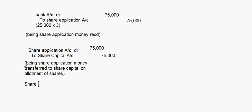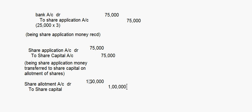After that, the allotment money becomes due. Share Allotment Account debit to Share Capital Account: 25,000 × ₹4 = ₹1,00,000. The narration: allotment money becoming due. On receipt of the allotment money: Bank Account debit to Share Allotment Account — ₹1,00,000.